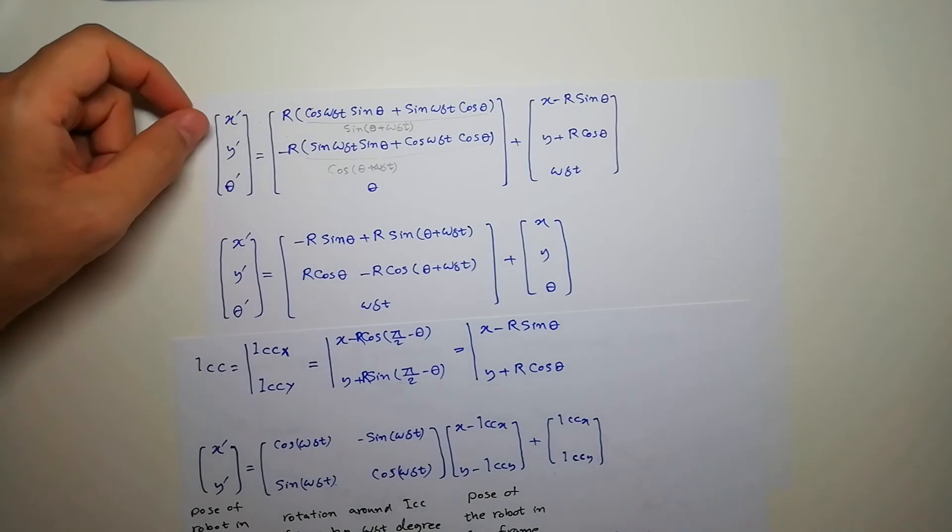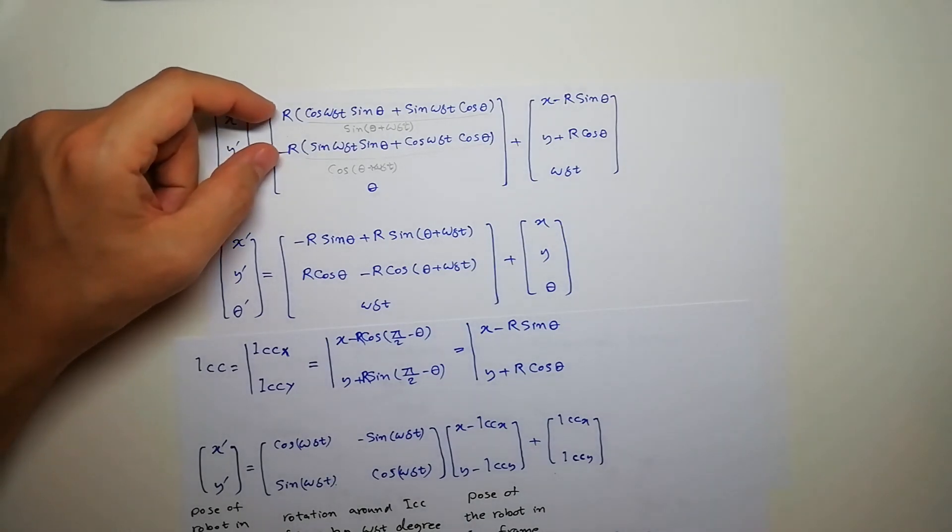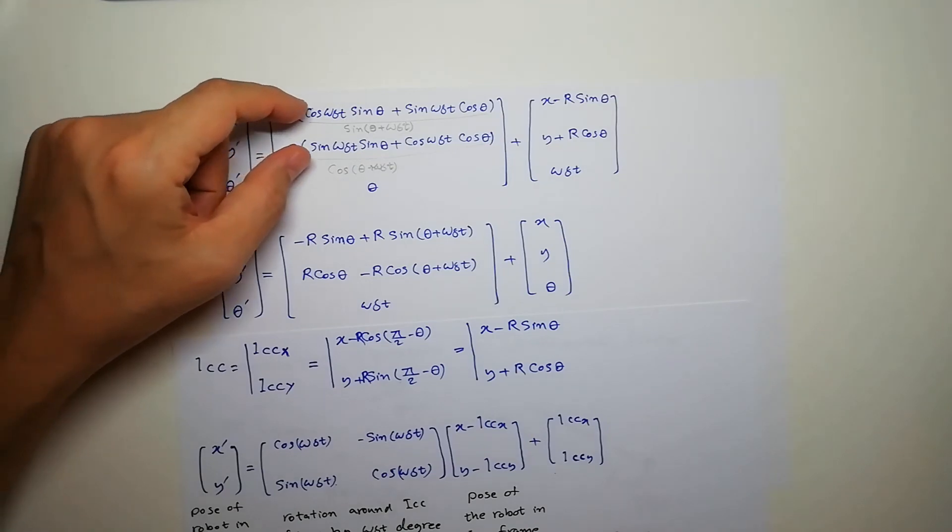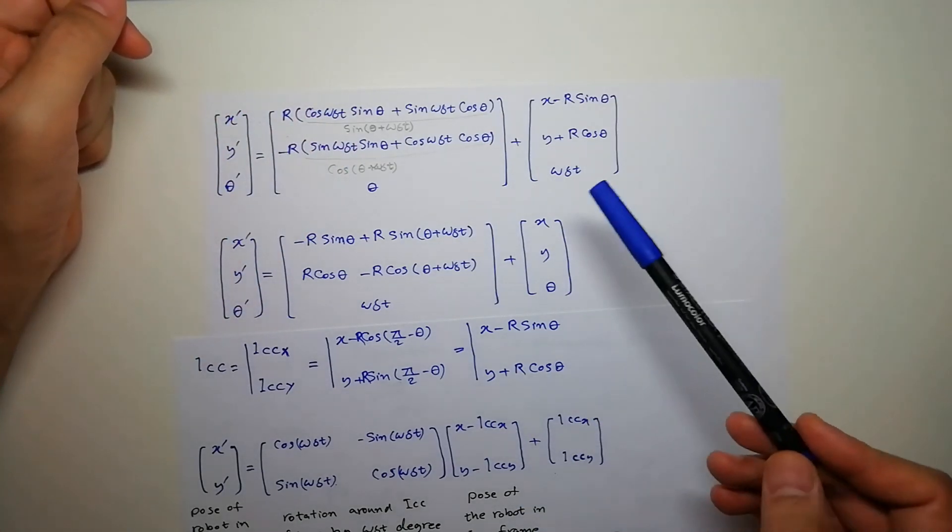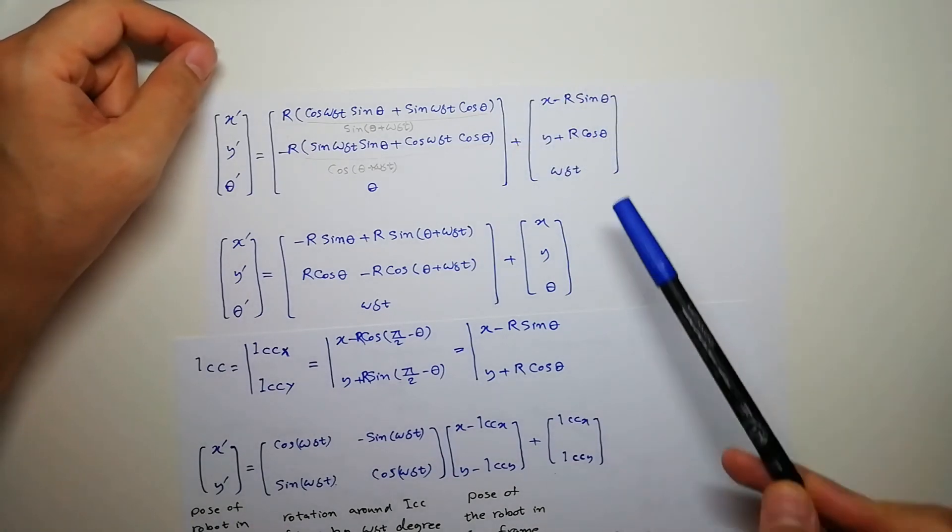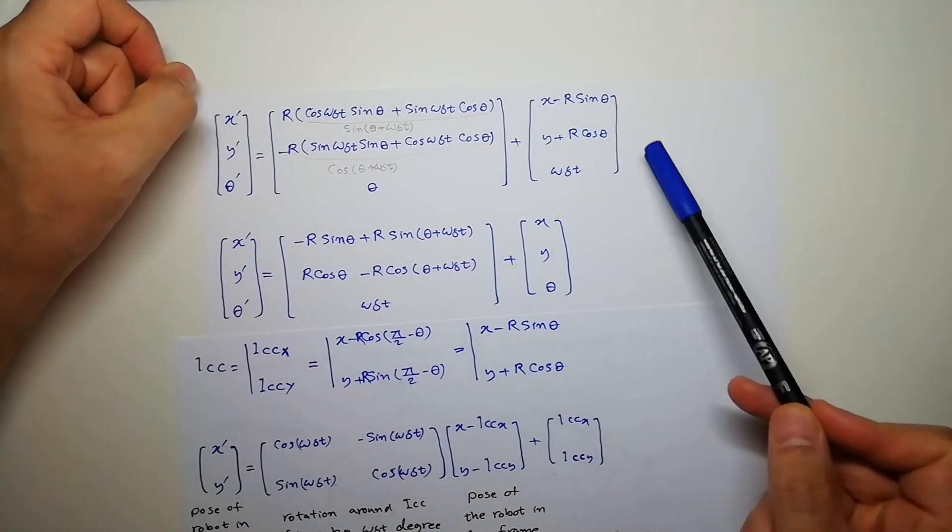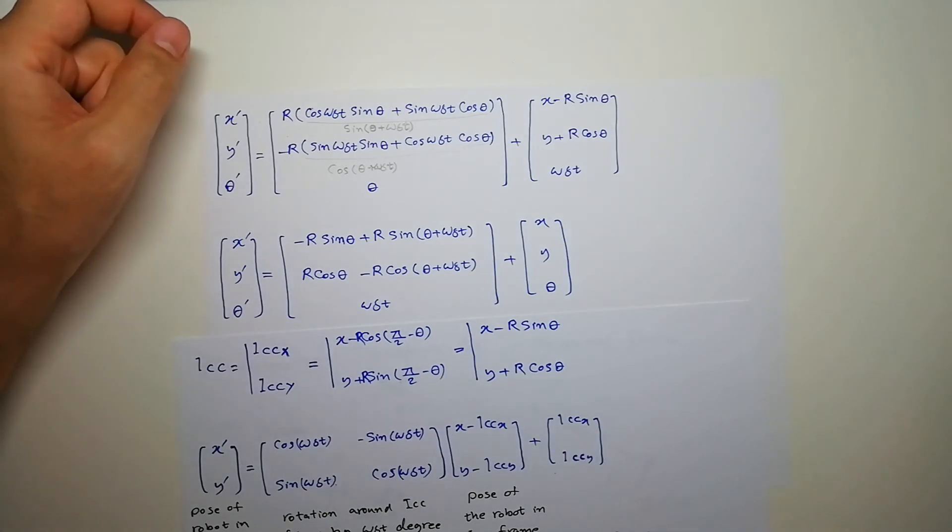So the new pose of the robot in the world coordinate system X prime, Y prime is equal to sine and cosine of theta plus omega delta theta plus X minus R sine of theta and Y cosine of theta.